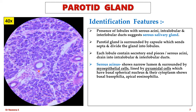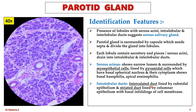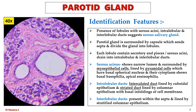Coming to the ducts — intralobular ducts are of two types: intercalated ducts and striated ducts. Intercalated ducts are lined by cuboidal epithelium, whereas striated ducts are lined by columnar epithelium which shows basal infoldings of the cell membrane, giving a striated appearance to the epithelium. Interlobular ducts are seen within the connective tissue septa and are lined by stratified columnar epithelium.